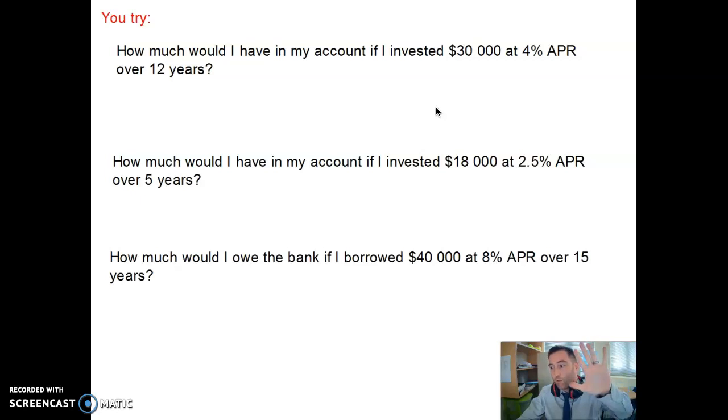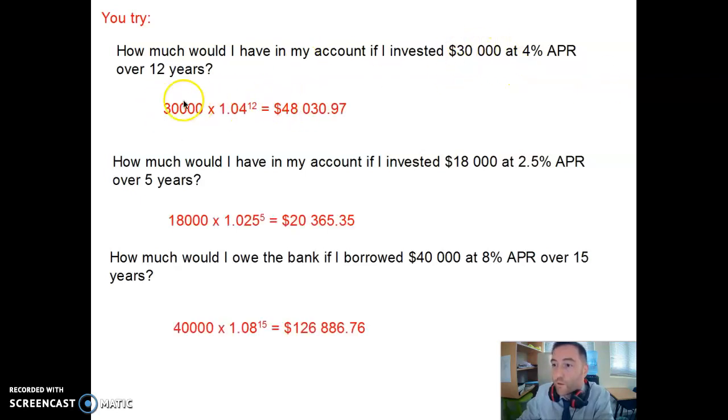And here are the answers now. So the first one, we took $30,000 multiplied by 1 plus 4 over 100, which I shortened to 1.04, to the power of 12. I'm sure you can check those answers and go back.